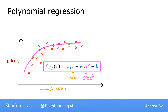But then you may decide that your quadratic model doesn't really make sense because a quadratic function eventually comes back down. And well, we wouldn't really expect housing prices to go down when the size increases, right?